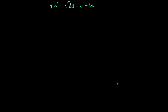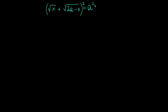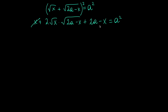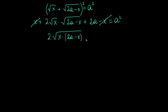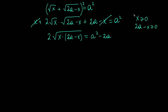First of all I want to square both sides of the equation to get rid of the square roots. The left-hand side squared equals A squared, which results in x and −x canceling each other, and the product of square roots becomes a square root of a product. But before I do that, I should note that each factor must be non-negative: x ≥ 0 and 2A − x ≥ 0. These give restrictions on variable x.